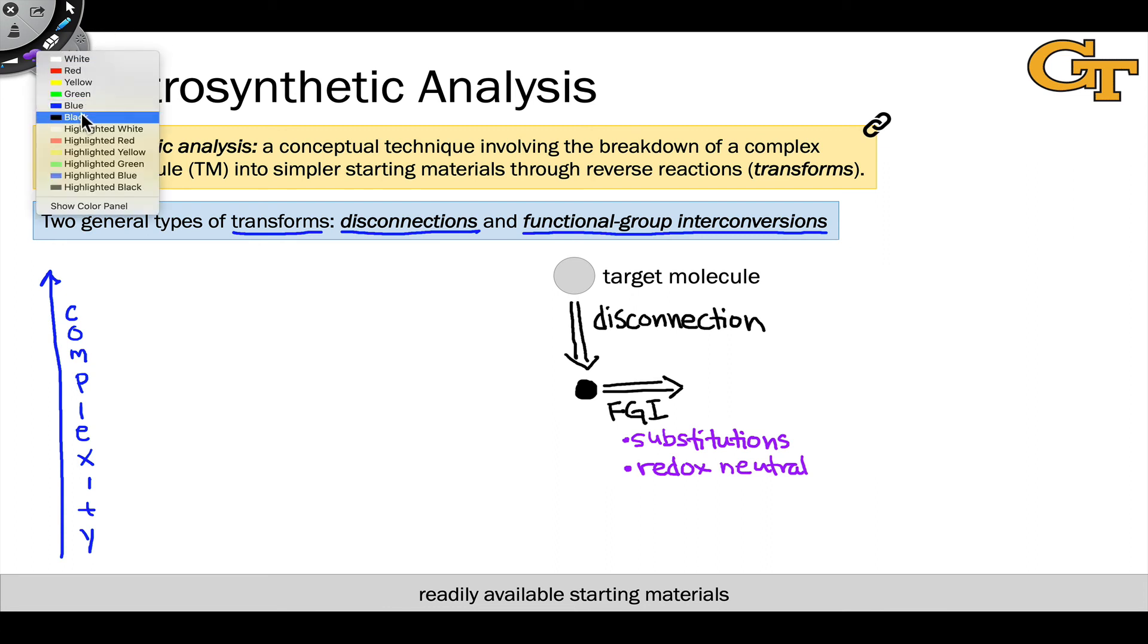We're just swapping out one atom for another, maybe oxygen for a nitrogen or a bromine for an oxygen or vice versa, something like this. So functional group interchange or interconversion reactions tend to move us laterally so that we don't change the complexity of the target when engaging that transform or in the forward direction engaging that reaction.